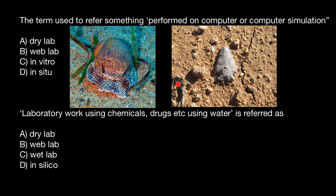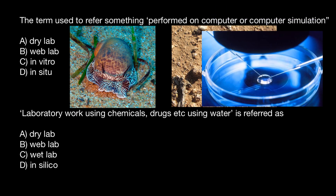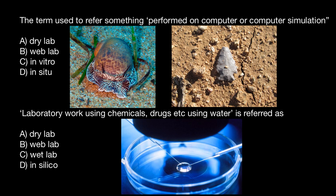Next is answer C: in vitro. Here's another picture — a picture is worth a thousand words. In vitro means 'in glass,' so you conduct your experiment in glass. For example, you can take some tissues and study them under the microscope, or it can be in vitro fertilization, where you take an egg and fertilize it with sperm.